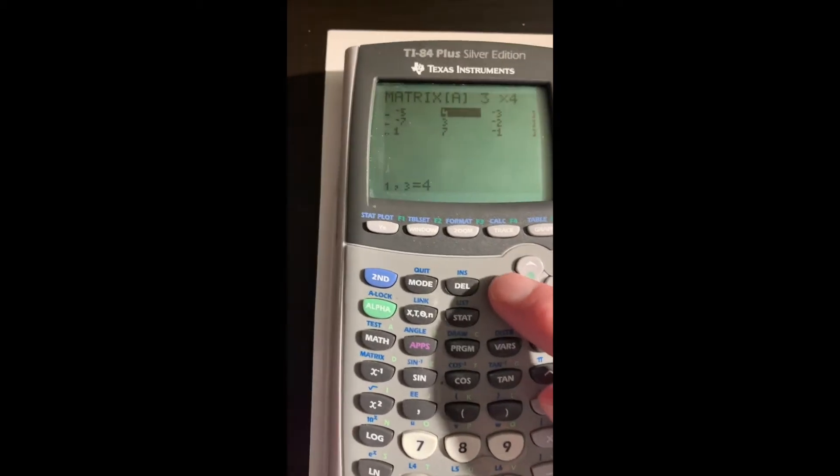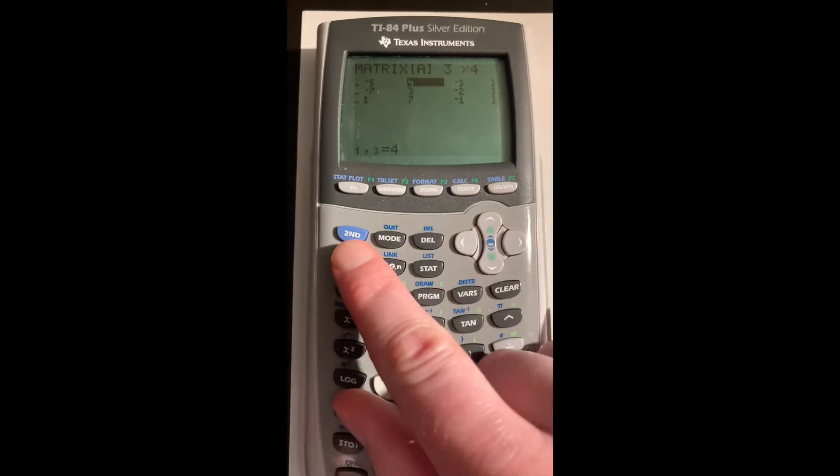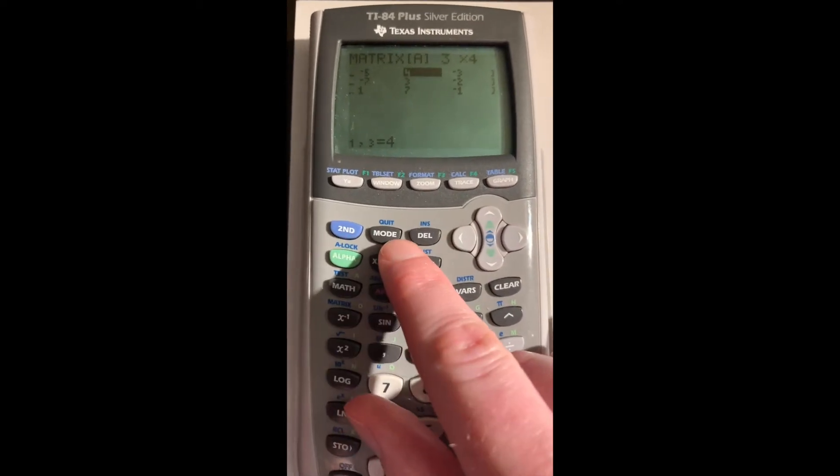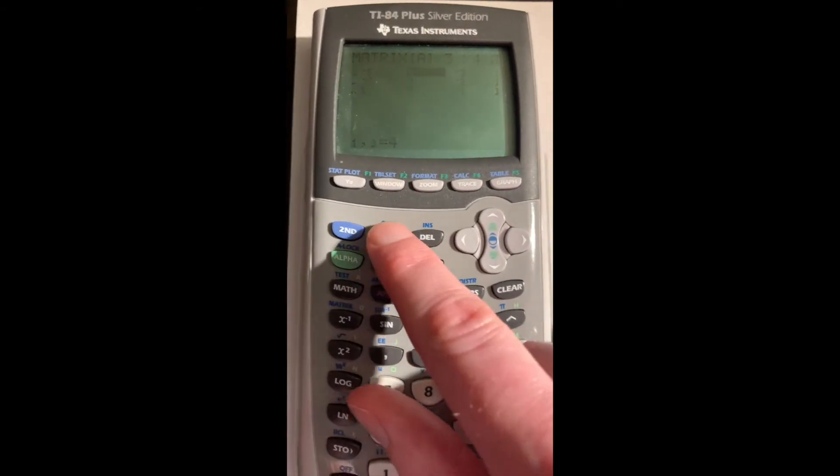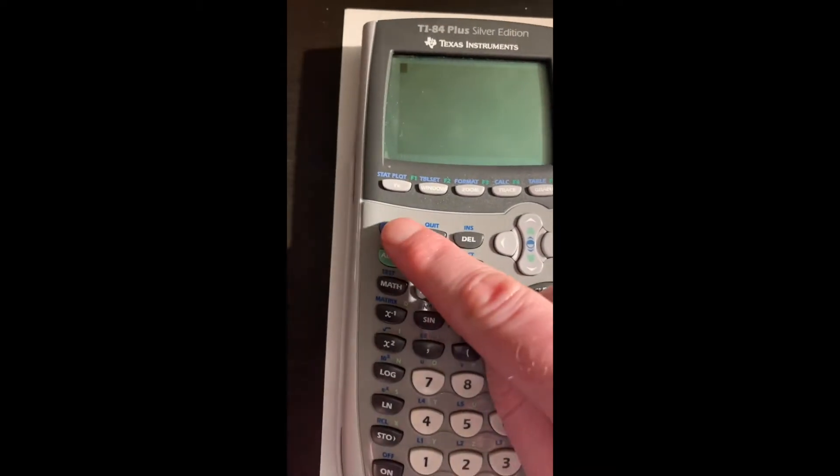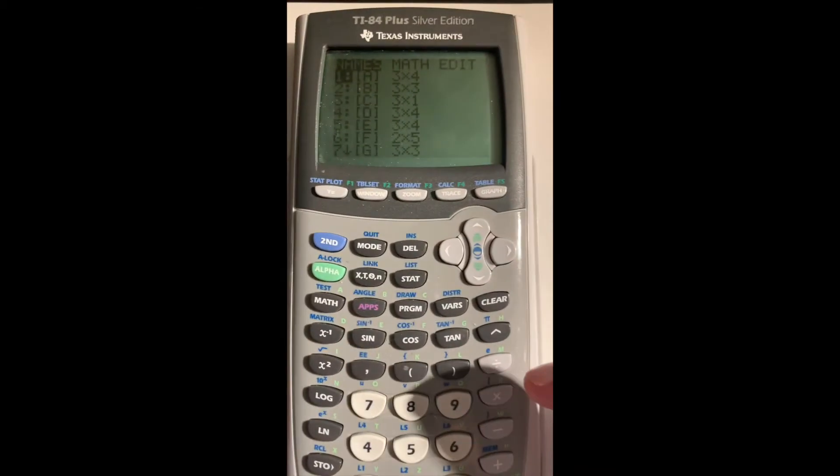Once the matrix is entered, we need to quit the matrix mode. We hit the second function button and then the mode button. The second function of mode is quit. So second, quit. Now we go back to the matrix menu, second, x to the minus 1, or matrix again.